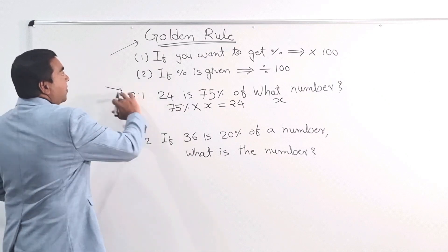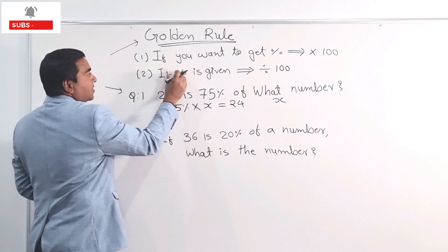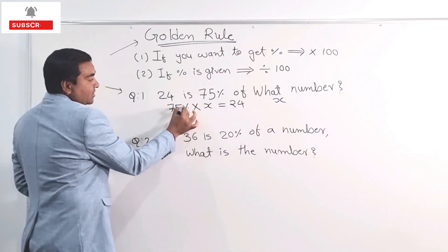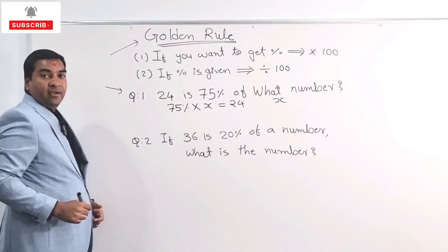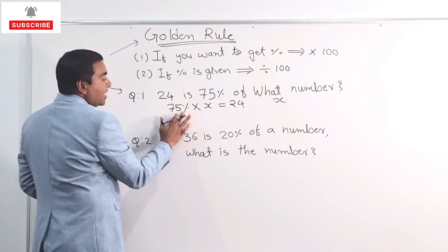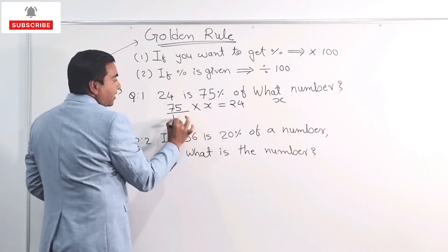Now, let's go back to our golden rule. If I want to get percentage multiply by 100, if percentage is given, divide by 100. I can see my percentage sign is given. And if I want to get rid of that percentage sign, what do I need to do is, I need to divide by 100. So I can take this percentage sign off now and I can just divide this by 100.